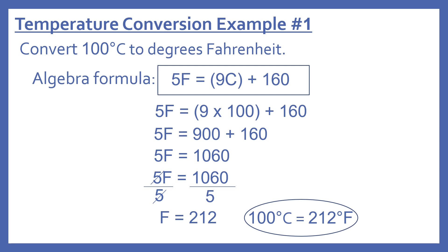What we do to one side we do to the other, so 1060 divided by 5 equals 212. So our degrees Fahrenheit is 212 — 100 degrees Celsius equals 212 degrees Fahrenheit.